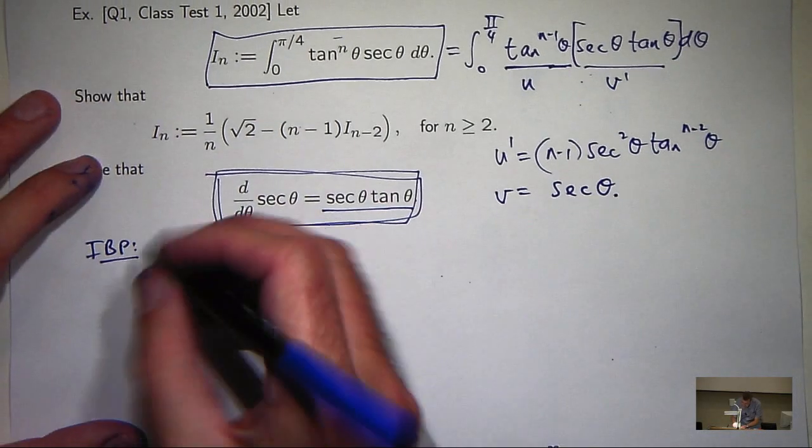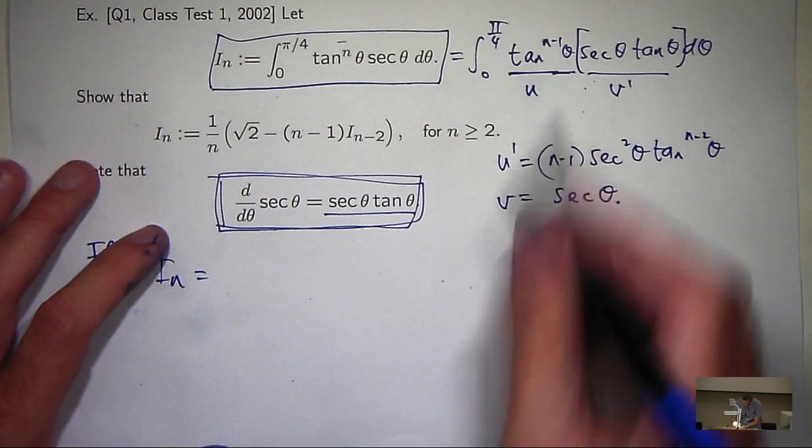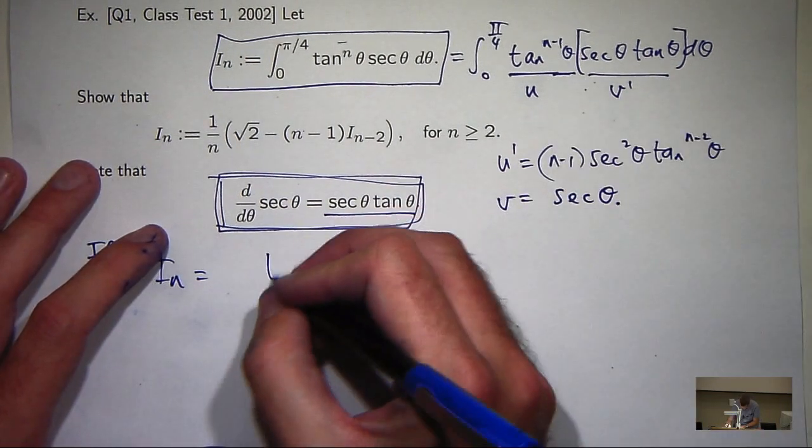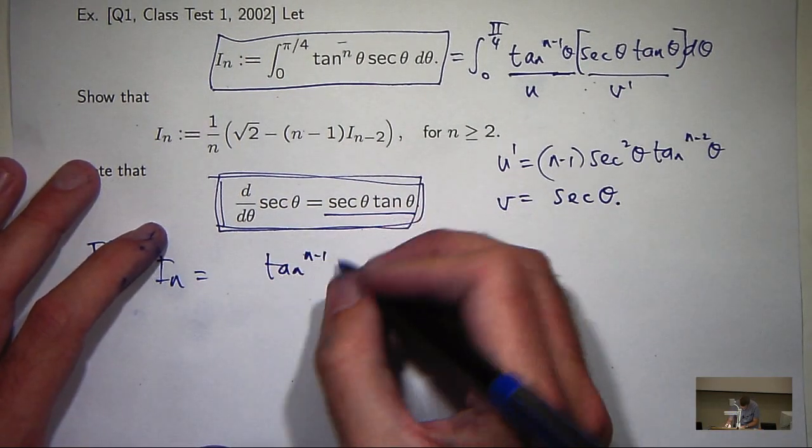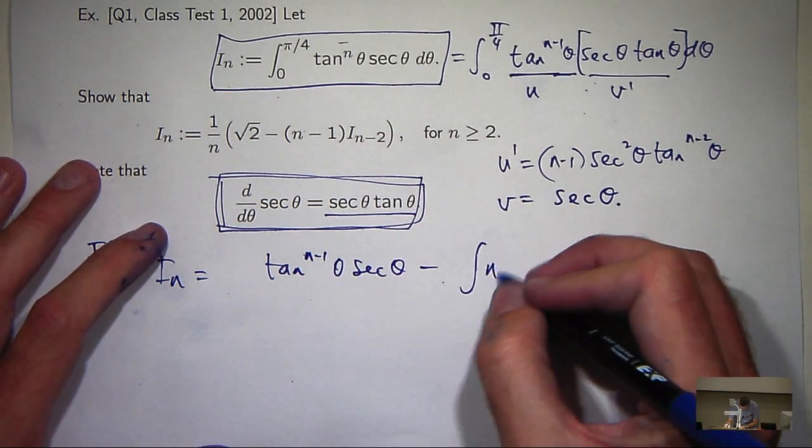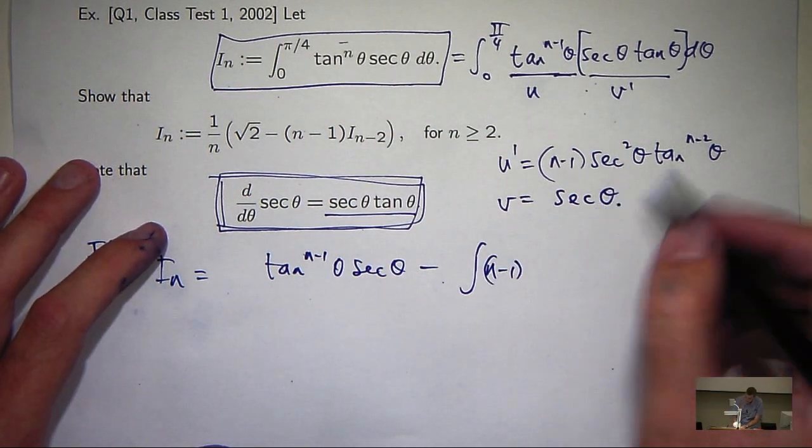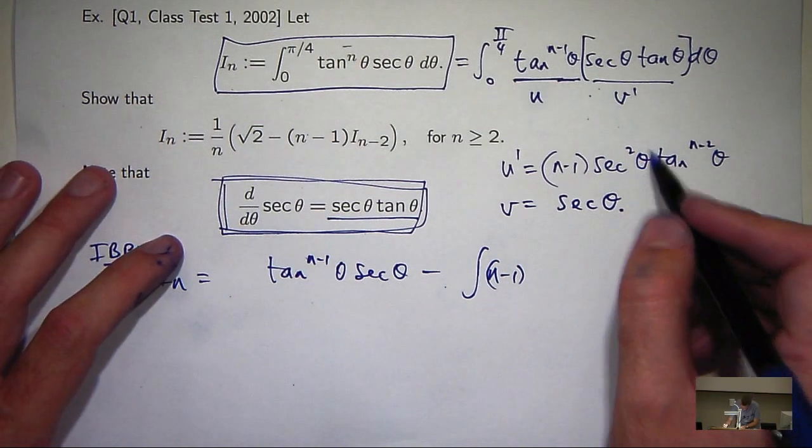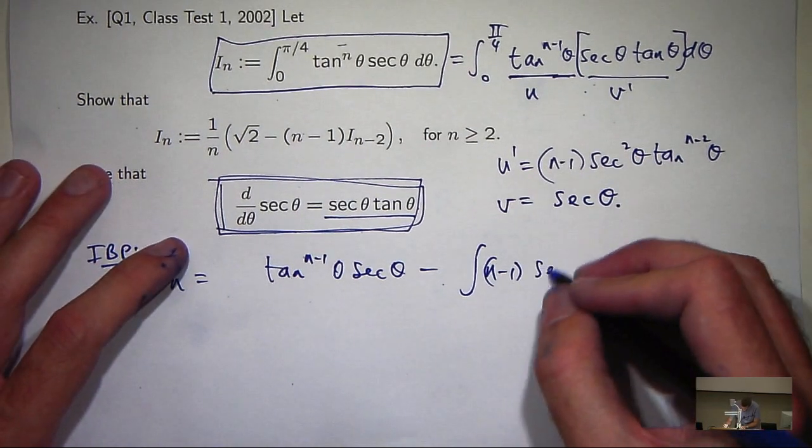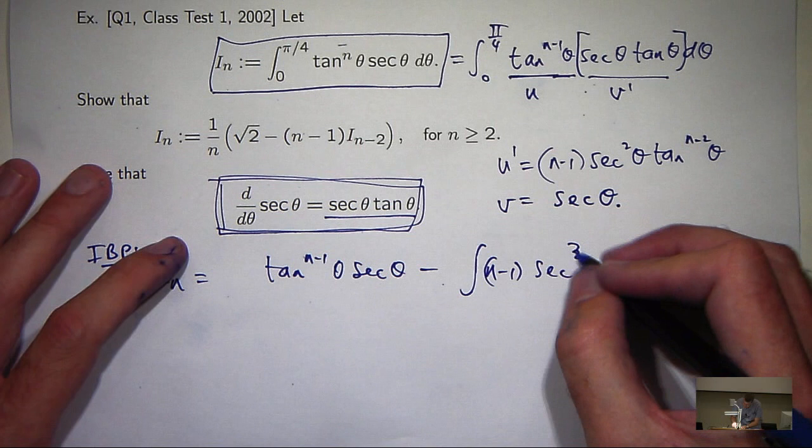So, i sub n, so I'm going to get a sec cubed in there. I can pull out the sec squared and replace it with something involving tan theta.